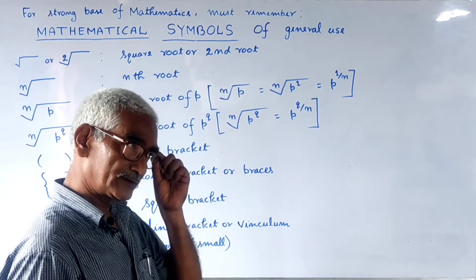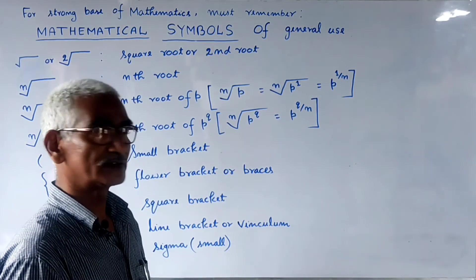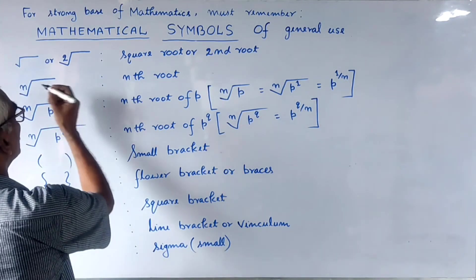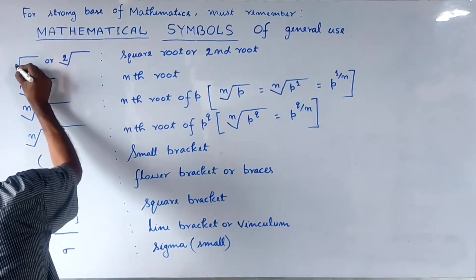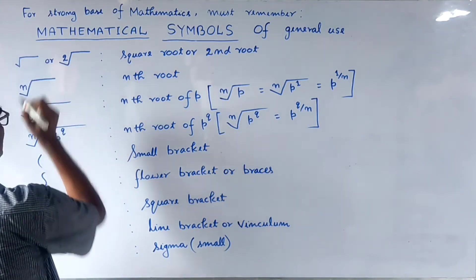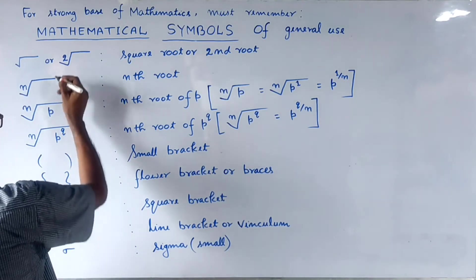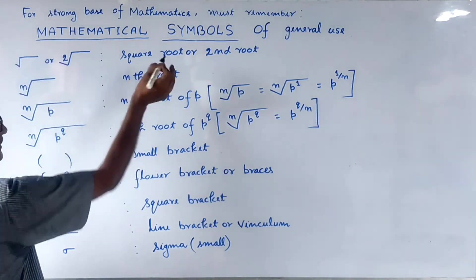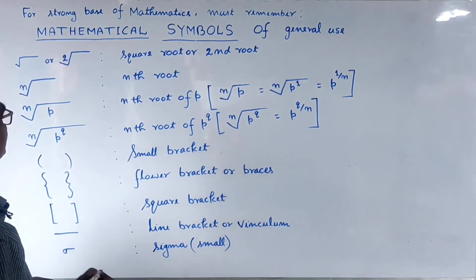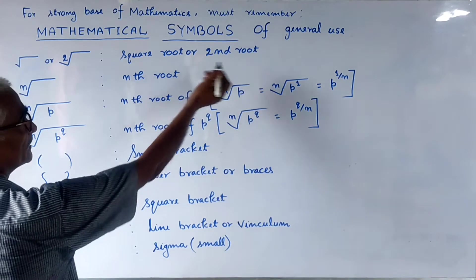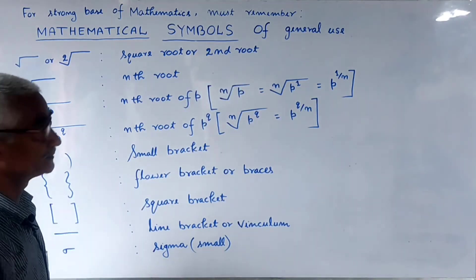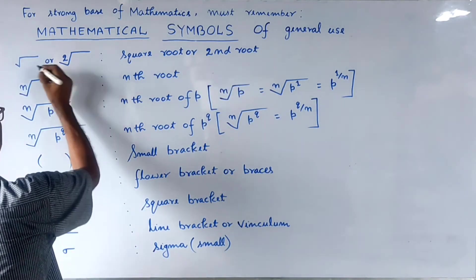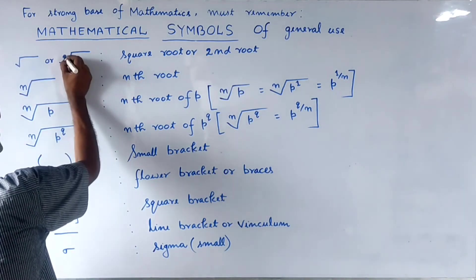Now let's see some other symbols. This symbol is a square root. Square root means the second root.